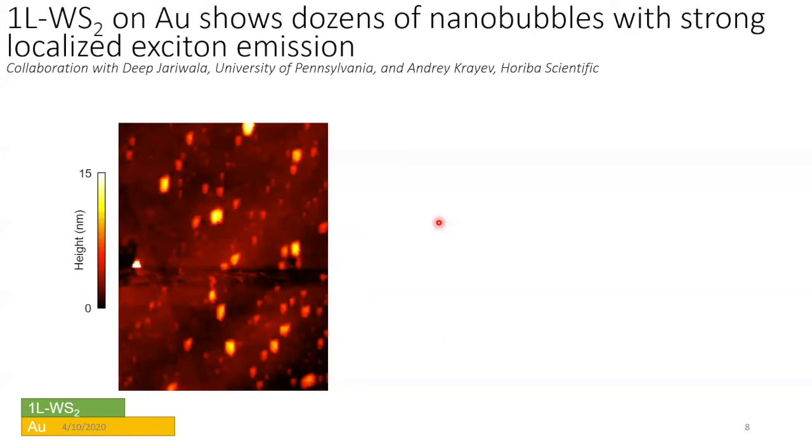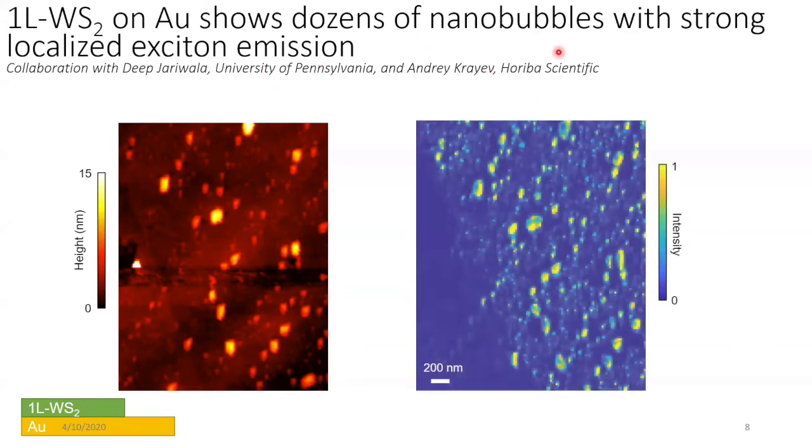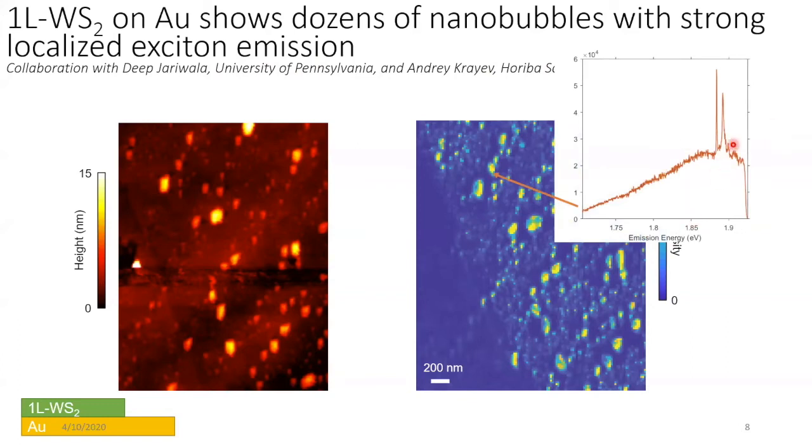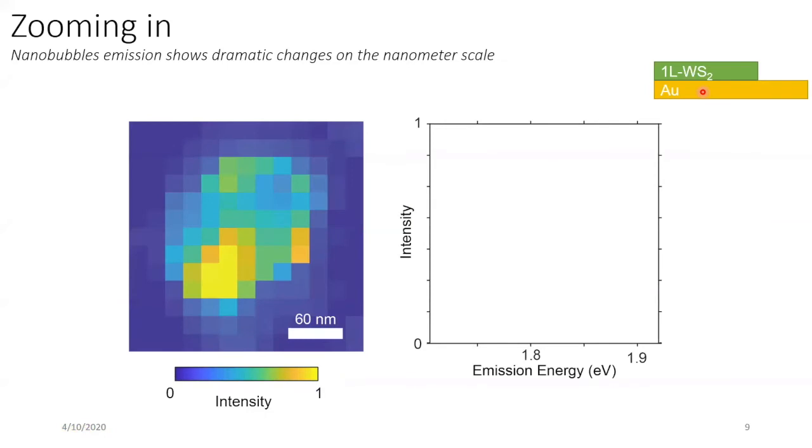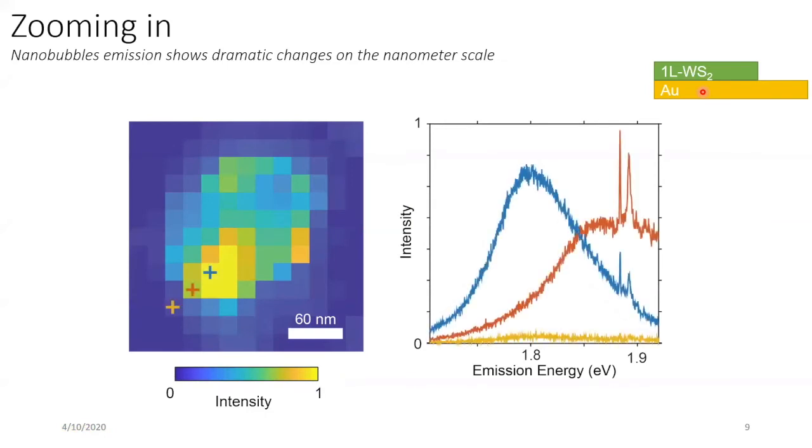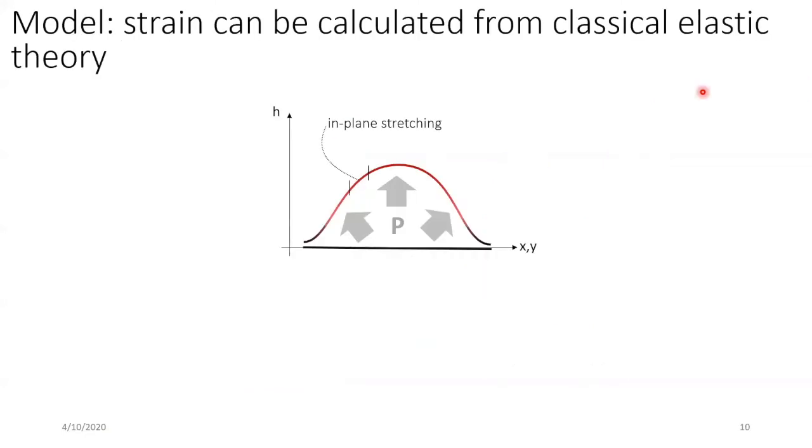So this is the broader AFM where that little subset came from. We do a TPL-TERS image of that taken by Andre. The sample is made by Deep Jariwala at University of Pennsylvania. You get a bright map of all the nanobubbles. They really light up like Christmas trees in this sample. If you look at the spectra from a nanobubble here, you've got a lot of photoluminescence and on top of that, very strong TERS or Raman signal of the vibrations of the tungsten disulfide. The question we struggled with is: how do you get the strain in these samples?